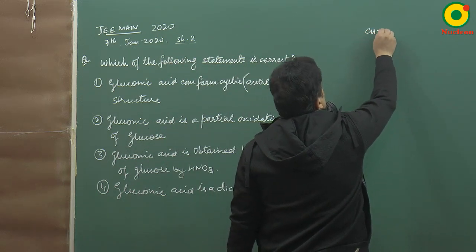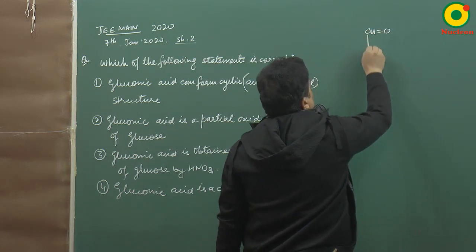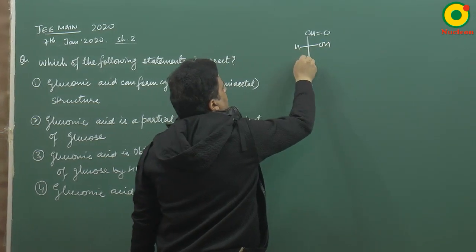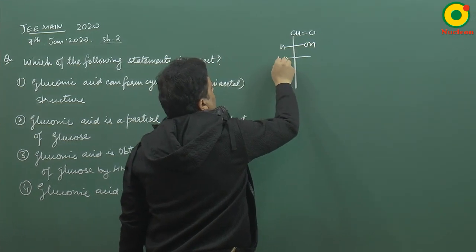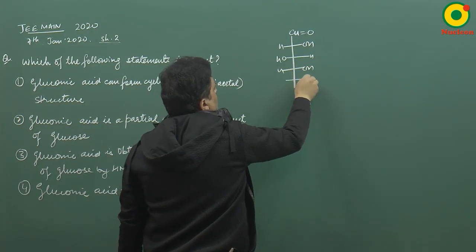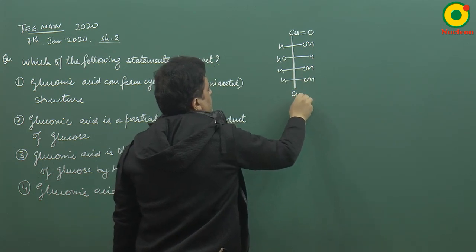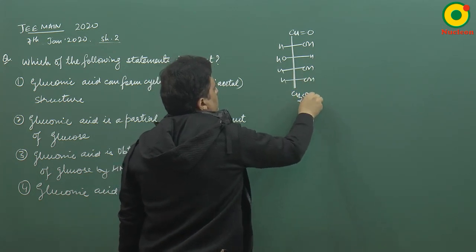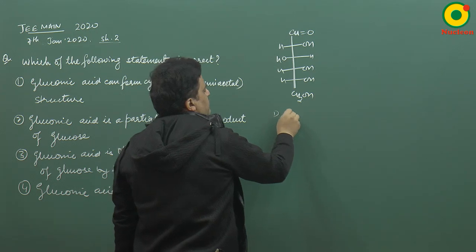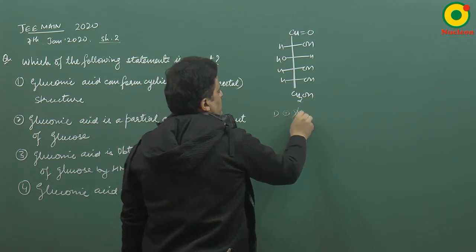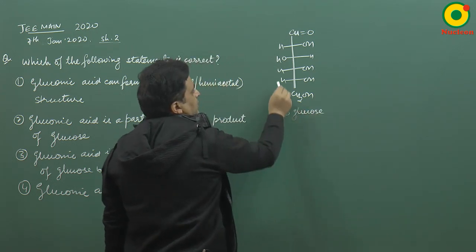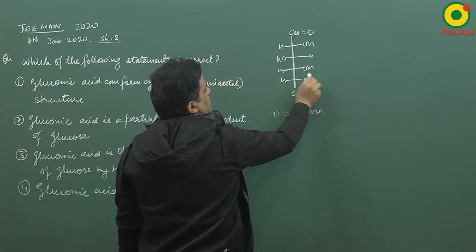In glucose, the first OH is on the right, the second OH on the left, the third OH on the right — this is D-glucose. Whether it is D or L is decided by the 5th carbon configuration.